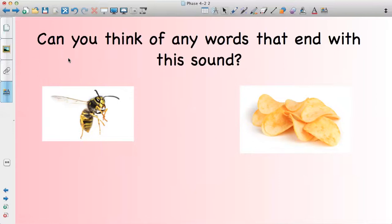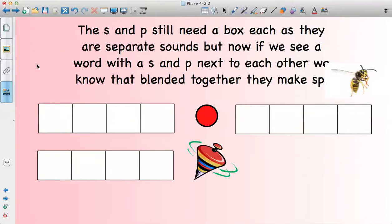Now, because I knew that sp close together made that sp sound, it made it a little bit easier for me to blend these words when I was trying to think in my head of how to spell them. So, we know that S and P still make separate sounds. When we do this activity, you can get a piece of paper and have a go at doing this. You know that the S and the P will need their own box because they are separate sounds. They are not a digraph. But we also know that if we are reading a word like this now, S and P together, they make a sp sound. So it'll just make it a little bit easier for us when we are blending.